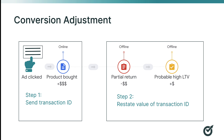And it's really important to report this different value because automated bidding systems from Google will try to get you more clicks to drive high value. So if they don't see returns happening, they will get you more customers who return a lot of stuff. But if you tell them when returns happen, they'll stop doing that and get you better conversions.